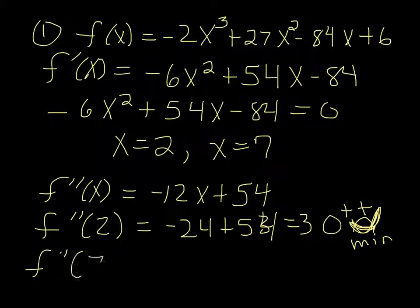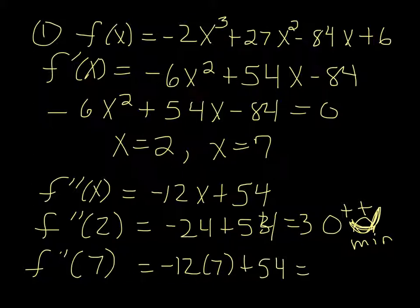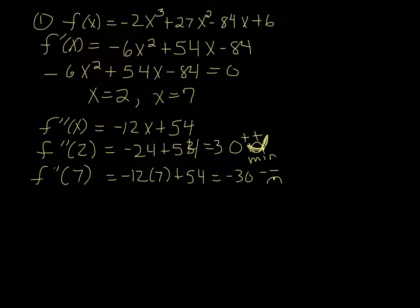And then plug 7 into the second derivative. So -12 times 7 plus 54. So that's -84 plus 54. It's -30. So two minuses, frowny face, and that makes it a maximum. So the maximum is at 7. The minimum is at 2.